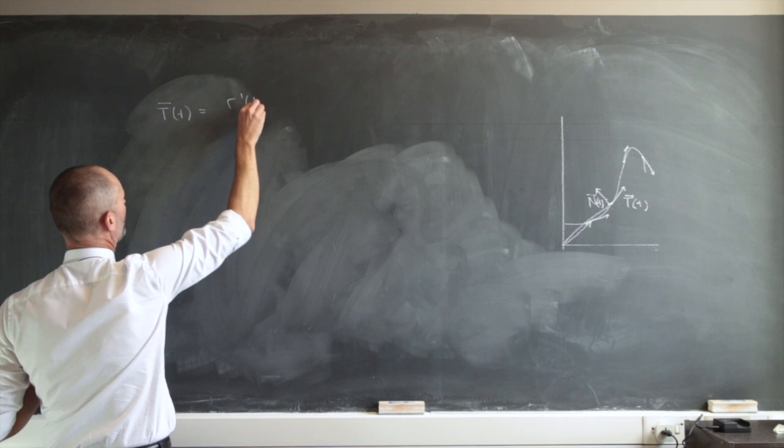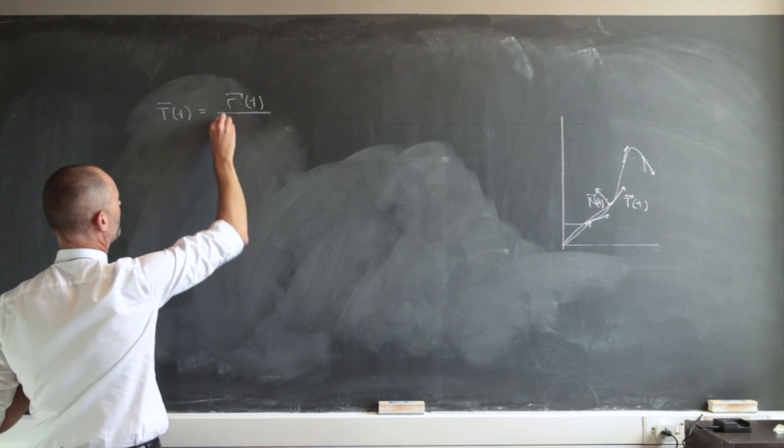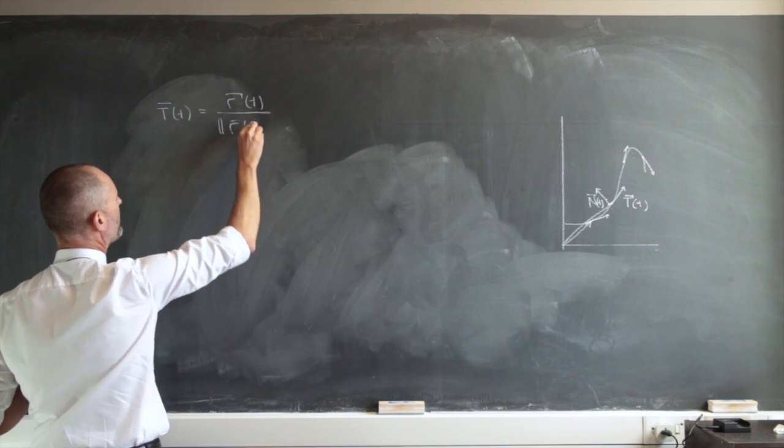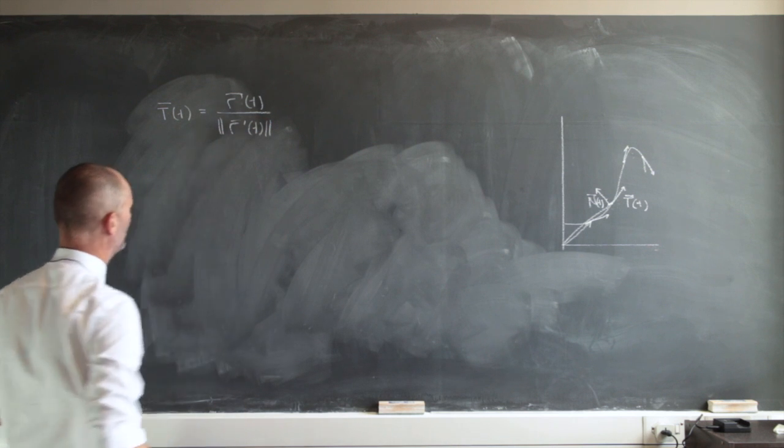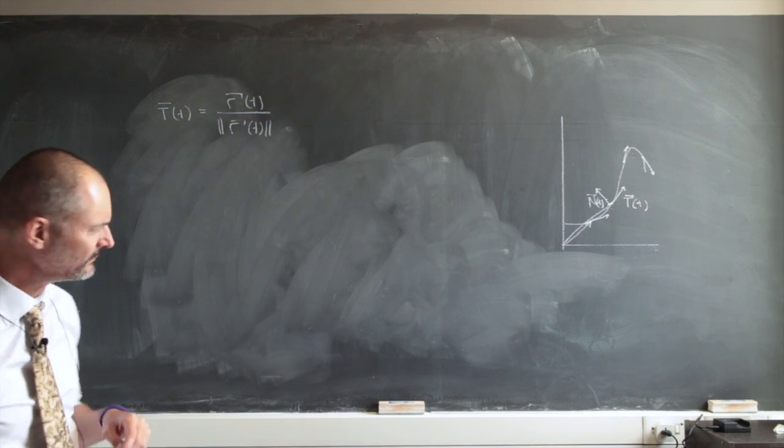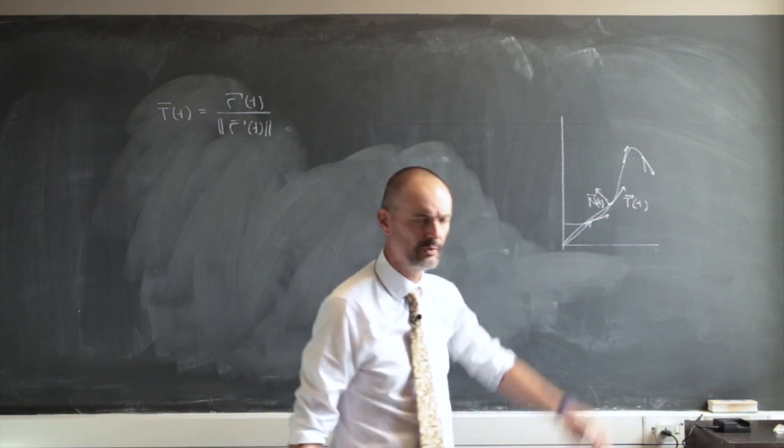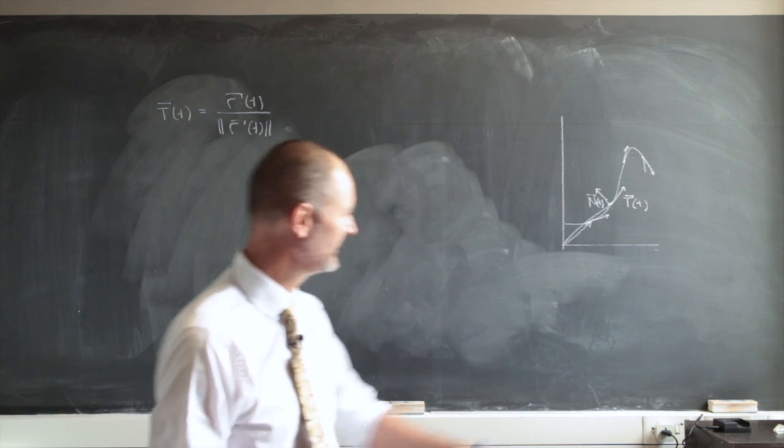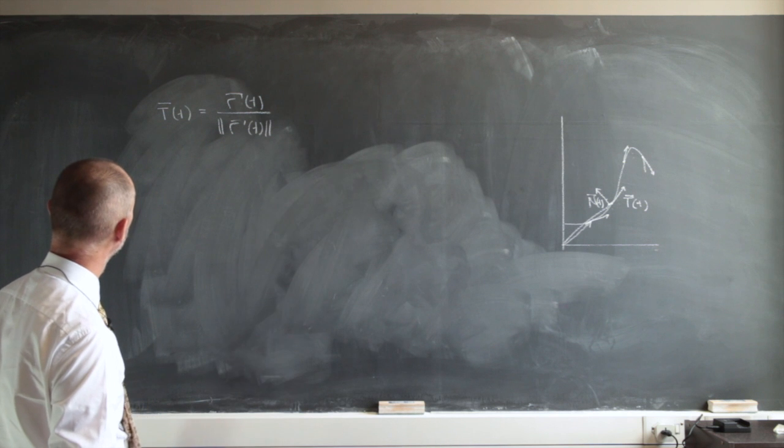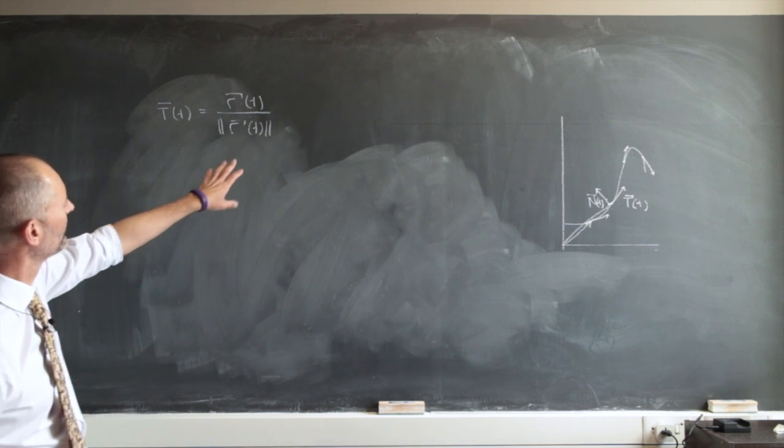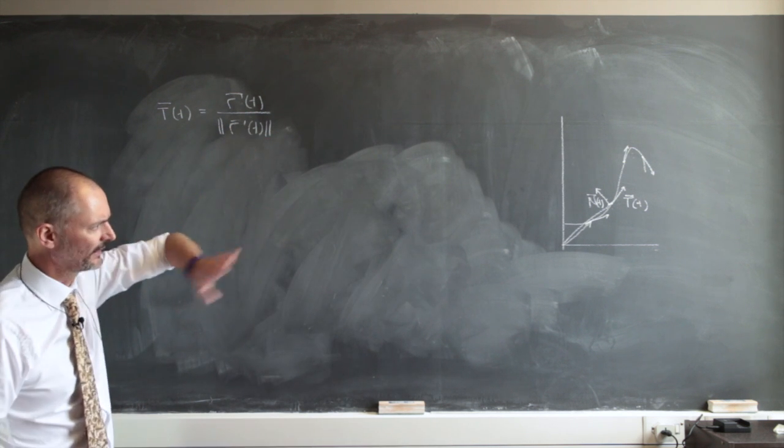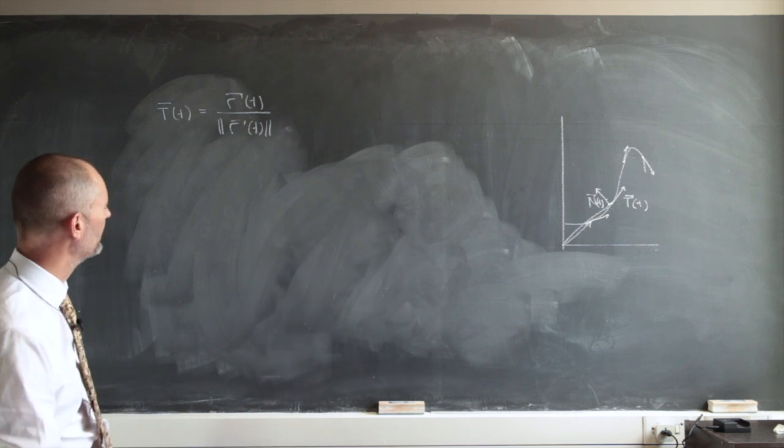That is r prime of t divided by its magnitude. So this is this little guy there, the unit tangent vector. I mix these up. So it's just the direction basically with a magnitude of 1 there.